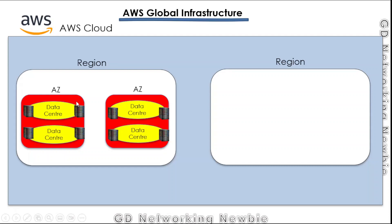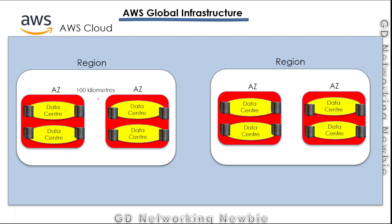Within those availability zones we have data centers. These data centers are the physical servers for storing data — physical servers where we can create virtual machines or store our data. So we have different regions in different countries, and in those countries they have their availability zones. In those availability zones they have their data centers, and in those data centers we have the physical machines shared among users throughout the world. The distance between availability zones can be around 100 kilometers.